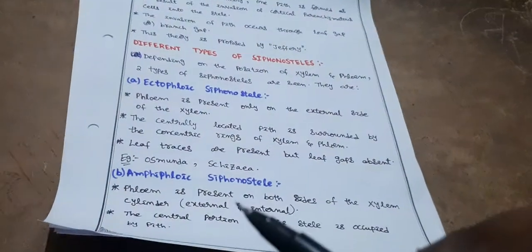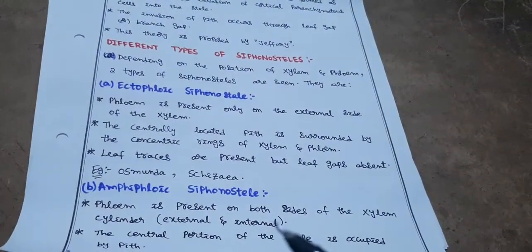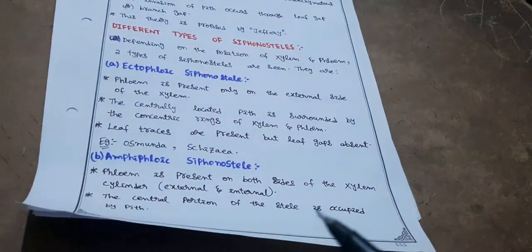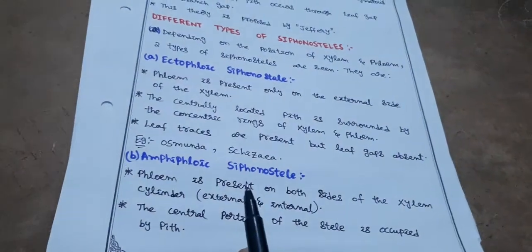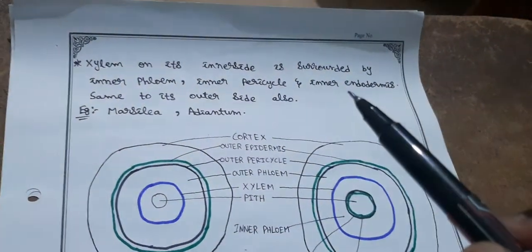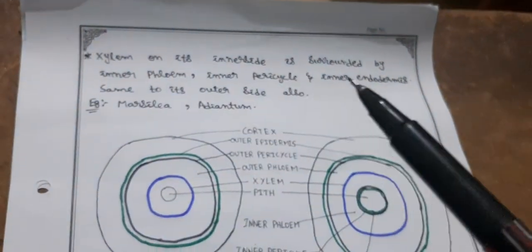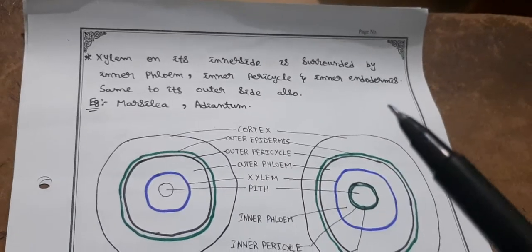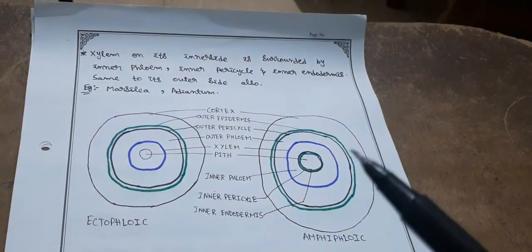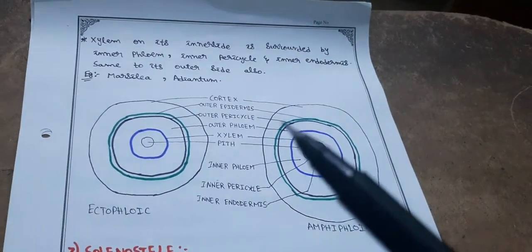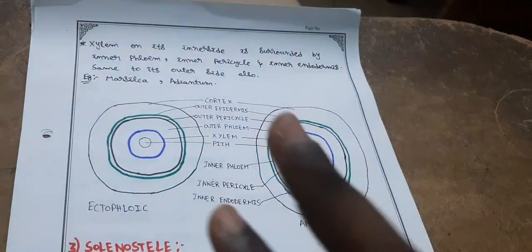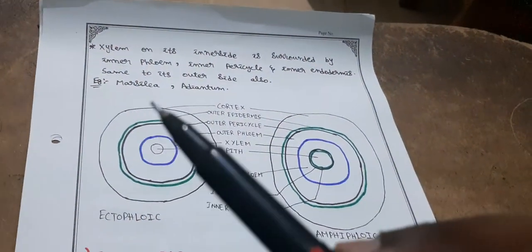Second, amphiphloic siphonostele — phloem is present on both the inner and outer sides of the xylem cylinder. The central portion is occupied by pith. On the inner side, xylem is surrounded by inner phloem, inner pericycle, and inner endodermis; on the outer side by outer phloem, outer pericycle, and outer endodermis. 'Amphi' means both sides. Examples: Marsilea and Adiantum.